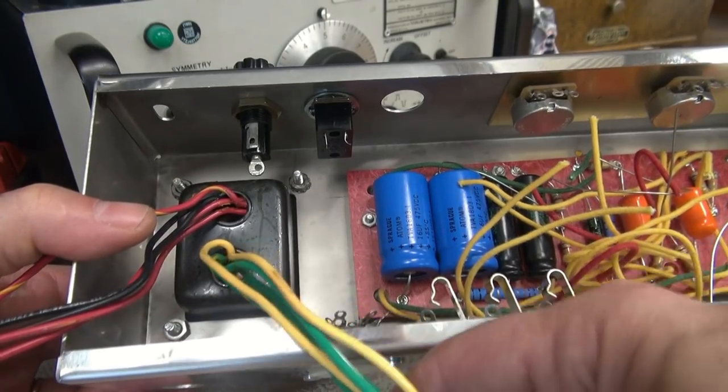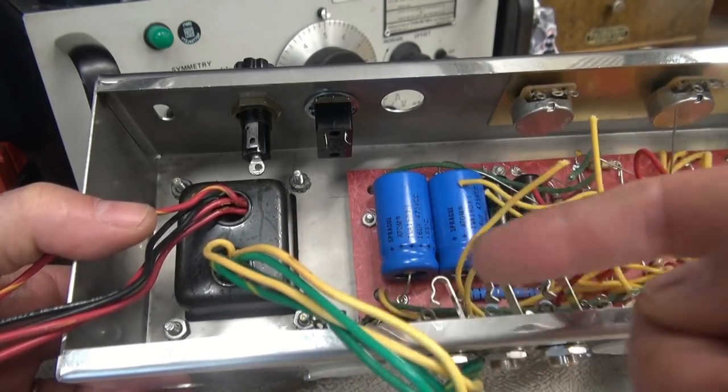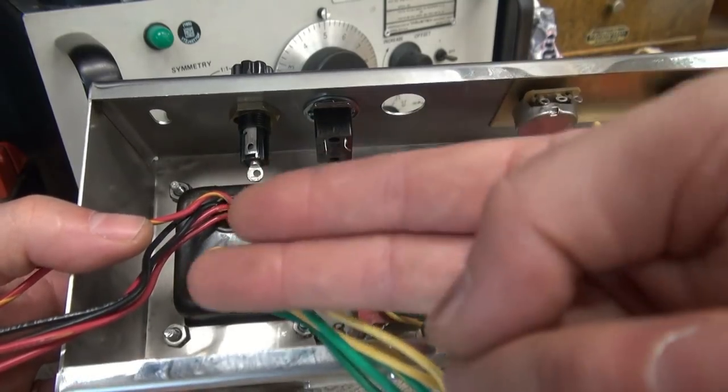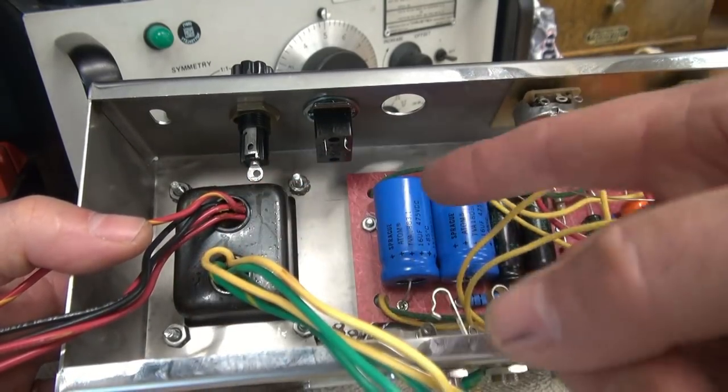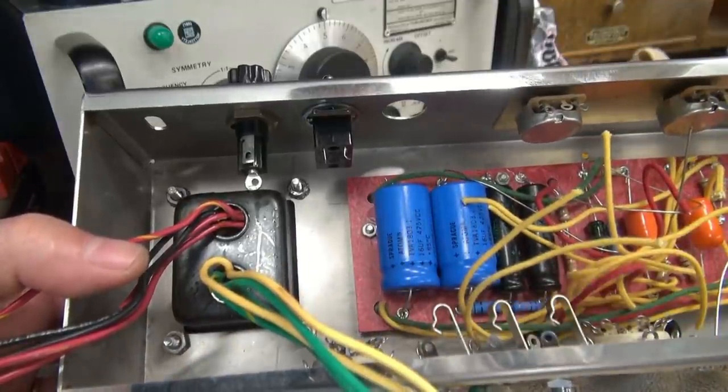Wiring is underway. I'm going to start with the filament wiring, that's what I always do because they have to be twisted and laced and tucked underneath the sockets so they're out of the way. Then we'll do the high voltage, then wire up the controls to the eyelet board and the rear jacks.